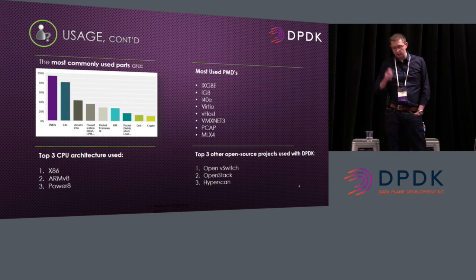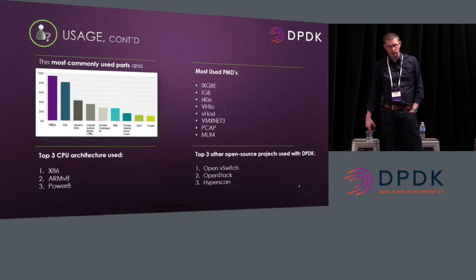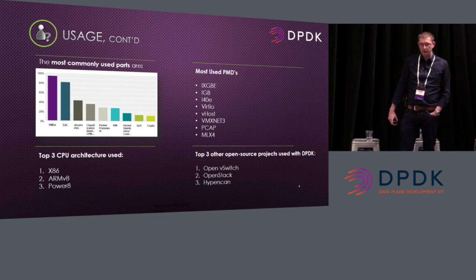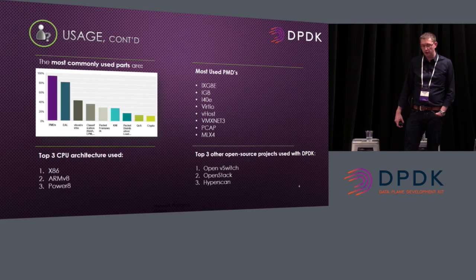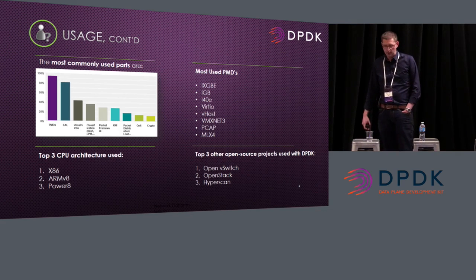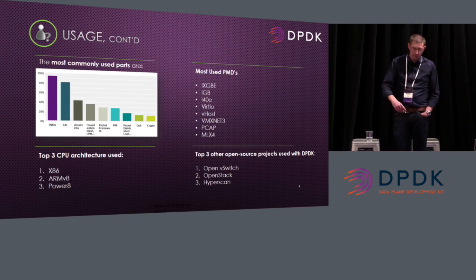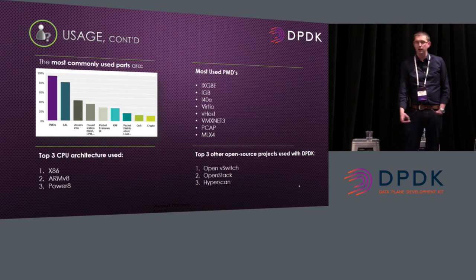We also asked what CPU architecture you're using. The top three are x86, ARM64, and Power8. We were also curious about what other open source projects people are using with DPDK. The top three from the survey were OpenVSwitch, OpenStack, and HyperScan.